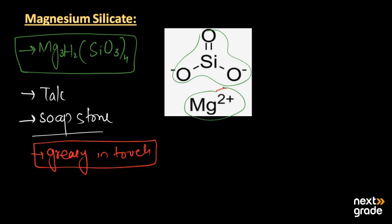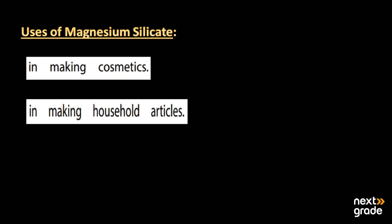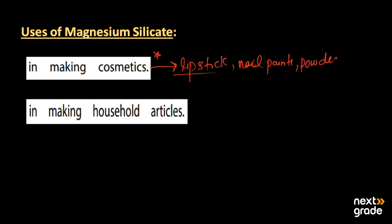The main uses of magnesium silicate include making cosmetics. It may be used in lipsticks, in the manufacturing of nail paints, and in different forms of powders. We also use it in talcum powder, so magnesium silicate is used in all of those applications.